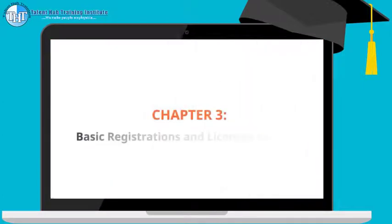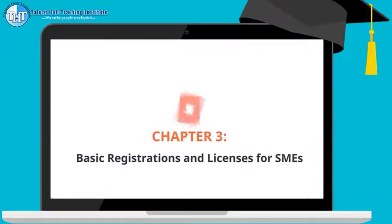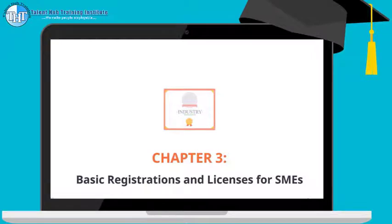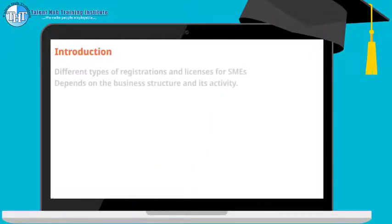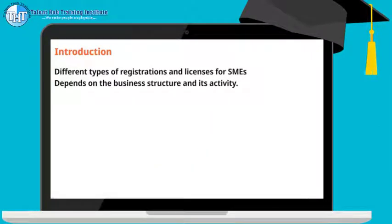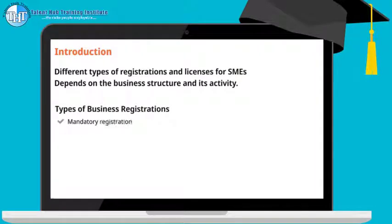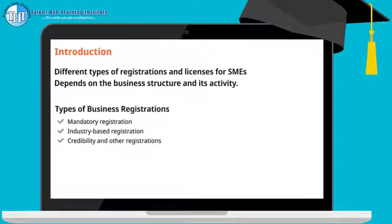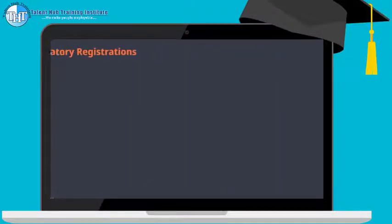Let's look at some basic registrations and licenses for SMEs to run a business smoothly and legally. Basically, the registrations are based on the structure of the business and its activity. Business registrations are categorized into three types: mandatory registration, industry-based registration, and credibility and other registrations. Let's understand each one in brief.